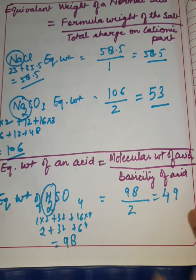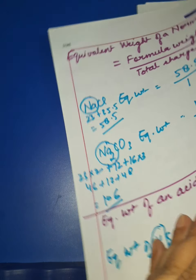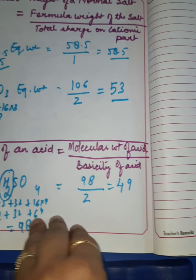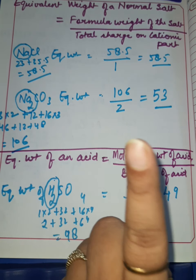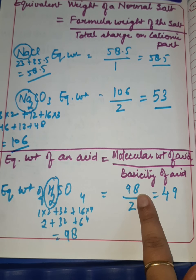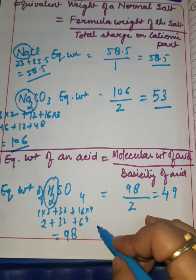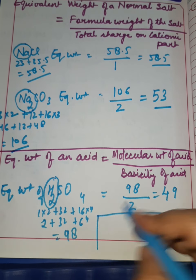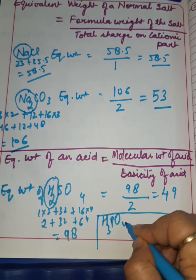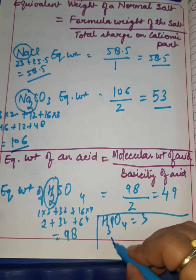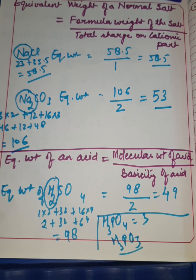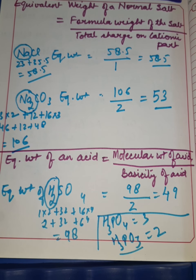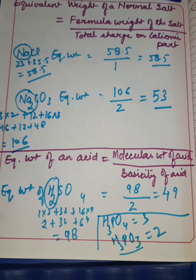If you know the basicity of all the acids, you can comfortably calculate their equivalent mass. It is very important that you have the correct idea of the basicity of an acid. For example, H₃PO₄ has a basicity of 3, but H₃PO₃ has a basicity of only 2, not 3. So you should have correct knowledge of the basicity of an acid to calculate its equivalent weight properly.